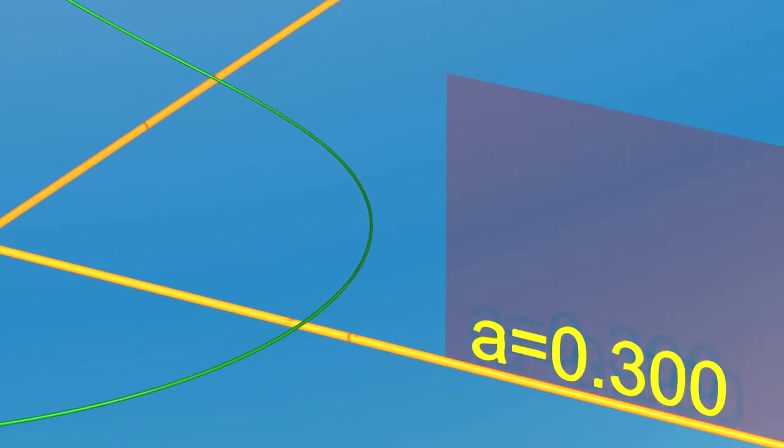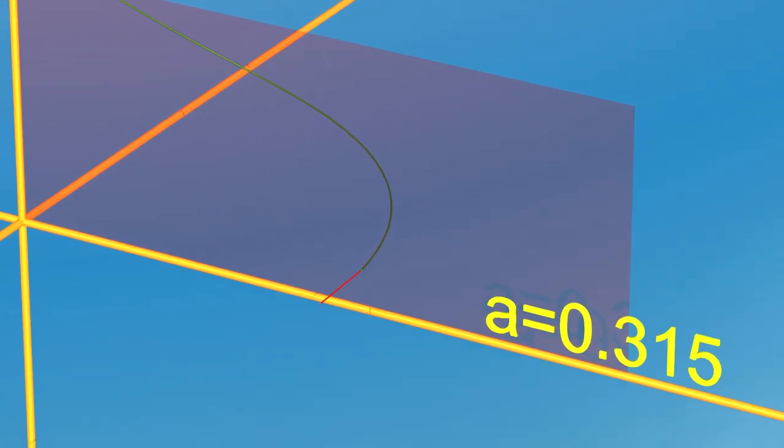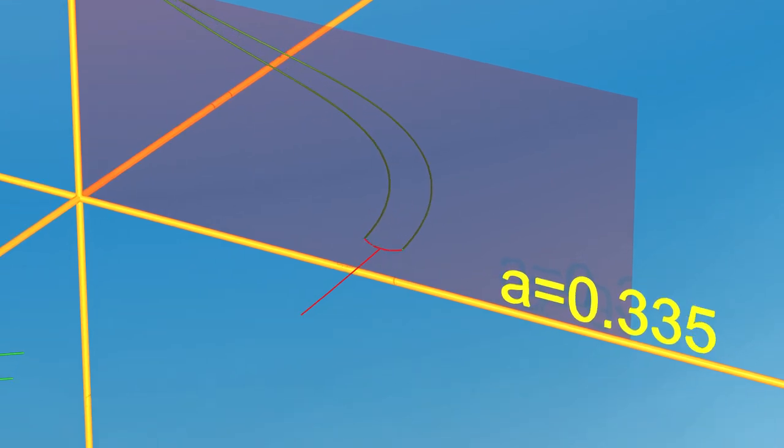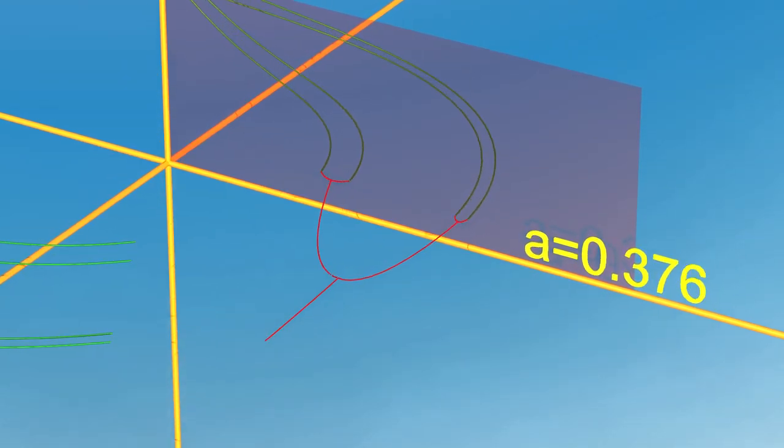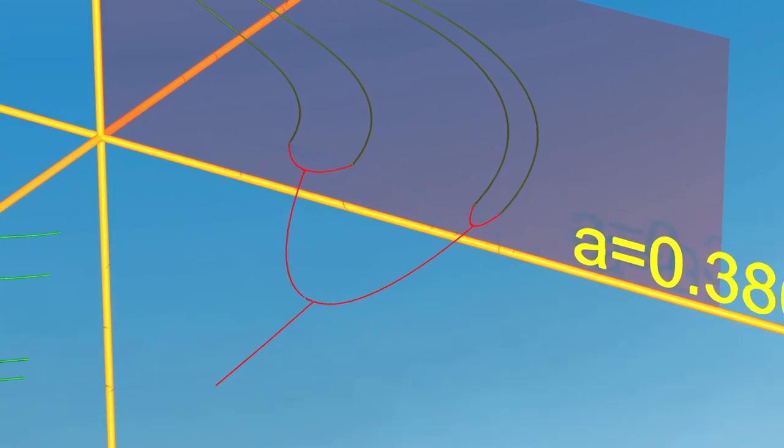For each value of A, we can record how the attractor meets a plane. We draw the intersection in red. As the parameter A varies, we obtain a picture that looks like a piece of lace. This is called a bifurcation diagram.